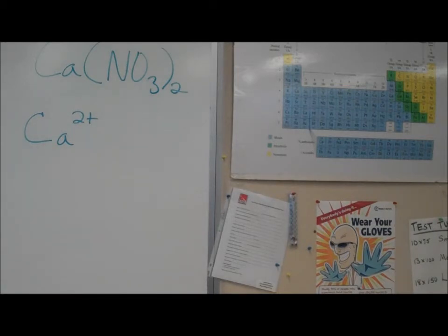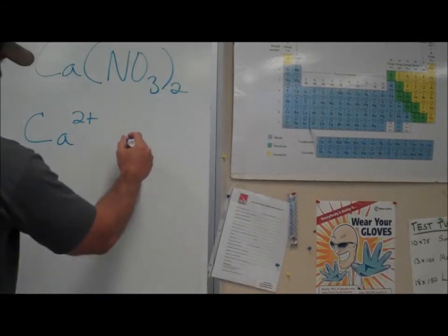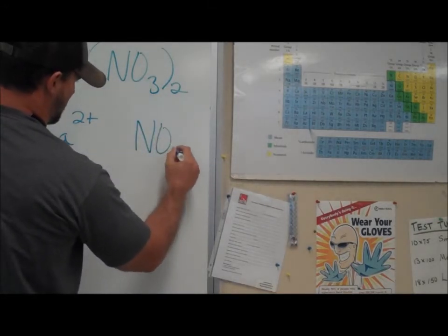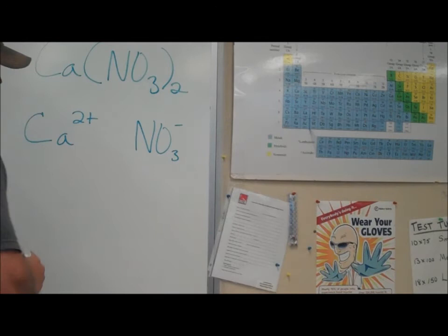Nitrate is a polyatomic ion with a symbol of NO3 negative one. Remember, you have to memorize your polyatomic ions or use a table from your lab manual.